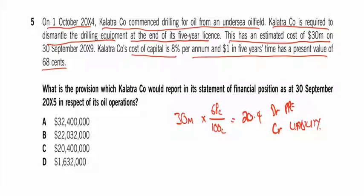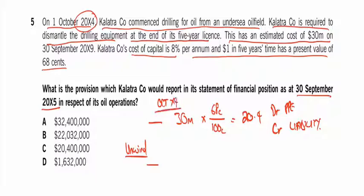Then what you would do each year — whenever you've discounted anything down, you need to unwind the discount. The provision at the 30th of September X5, i.e. one year later — that's at October X4, one year later September X5 — well, you take the provision of 20.4 million and you start to increase it up again, because it has to get back up to 30 by the end of the five years.